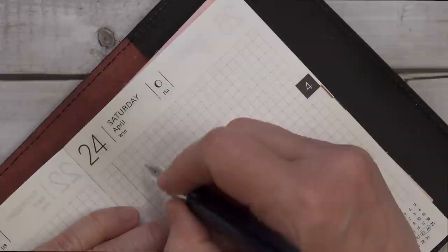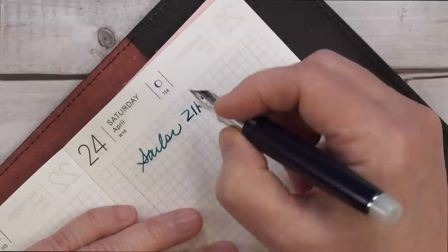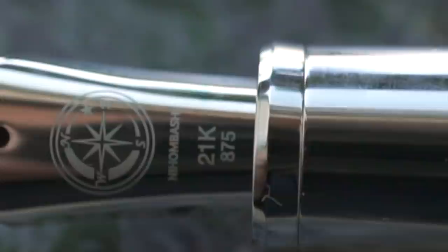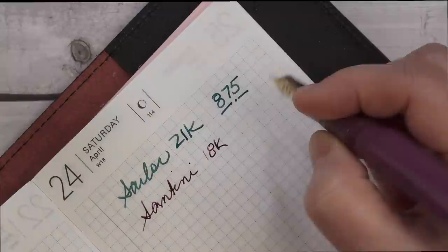As far as gold nibs, we have 21 karat gold nibs, which is basically 87.5% gold when you're looking at the 24 karat gold system. And that's why 21 karat gold nibs have 875 printed on them.